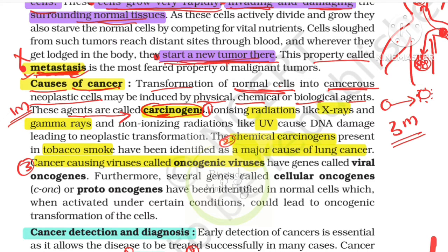Carcinogens are of three types: physical carcinogens, chemical carcinogens, and biological carcinogens. Physical carcinogens are radiations — ionizing radiations like X-rays and gamma rays, or non-ionizing like UV rays. These cause damage to DNA, and that DNA damage leads to cancerous cells.